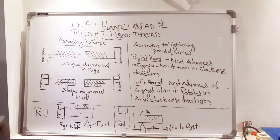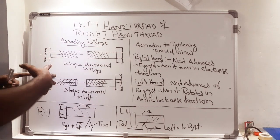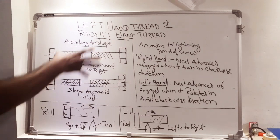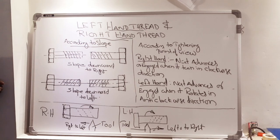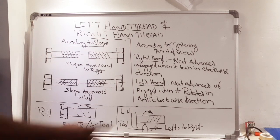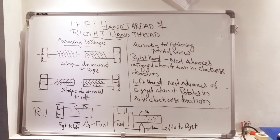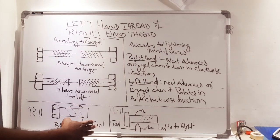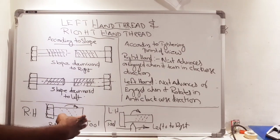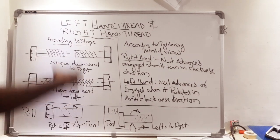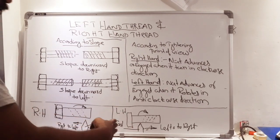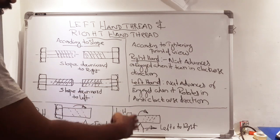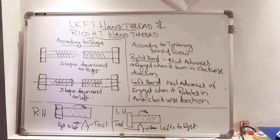We can define left-hand and right-hand thread from three points of view: first, according to slope; second, according to tightening point of view; and third, according to cutting point of view. In the cutting method, the cutting tool moves from left to right while the right-hand thread is formed, and for left-hand thread, the tool should also move from left to right while threads are forming. We will see more in the next class.